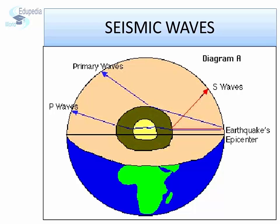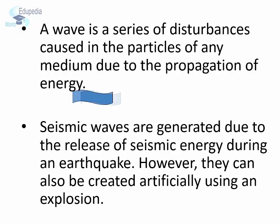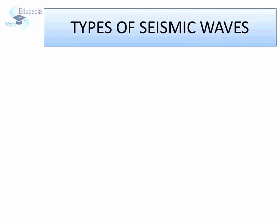During an earthquake, elastic energy stored in rocks is released and travels as vibration through the rocks outwards from the epicenter. Such vibrations are known as seismic waves. Seismic waves are a series of disturbances caused in the particles of any medium due to the propagation of energy. While earthquakes are the most common cause, seismic waves may also be produced artificially due to explosions, or even when a heavy vehicle passes by on a road.